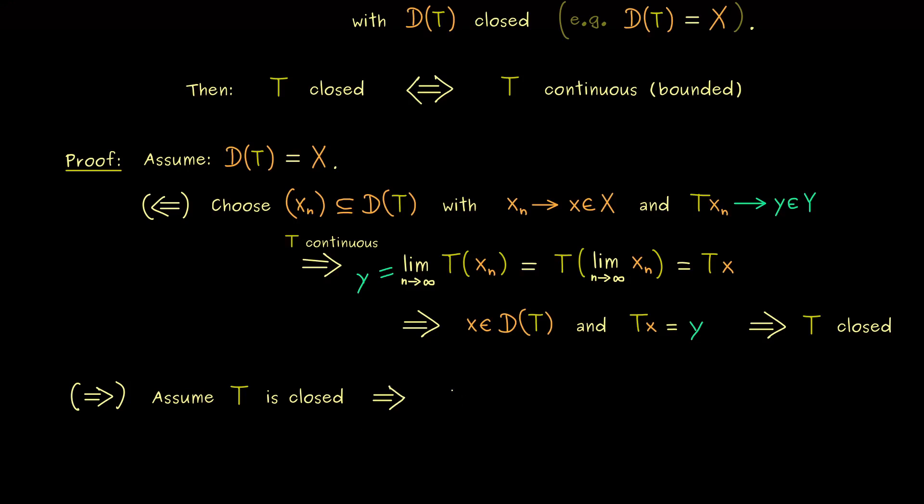So this implies exactly by definition that the graph of T is a closed set. So we write the set G_T is closed in the Banach space X×Y. Therefore if we see G_T as a vector space with the norm from X×Y, then G_T is also a Banach space.